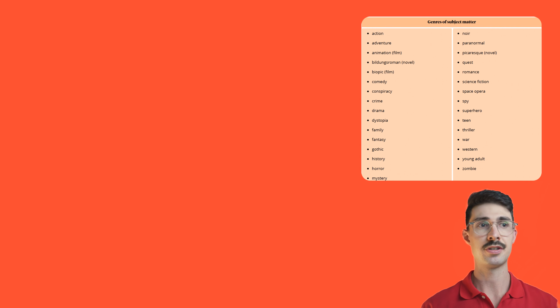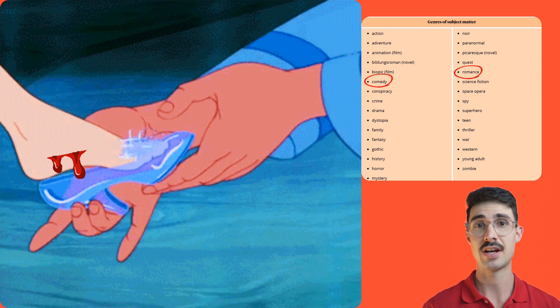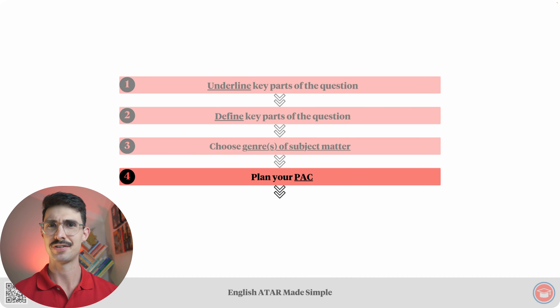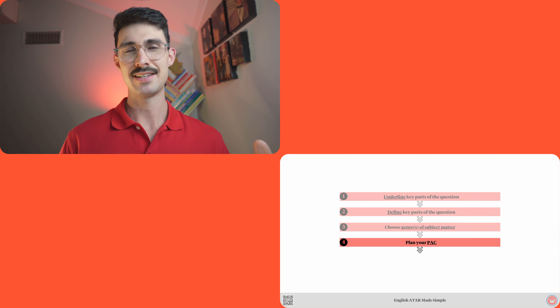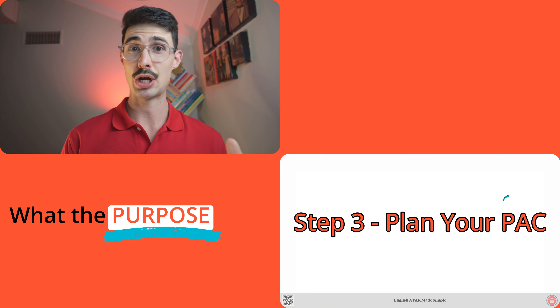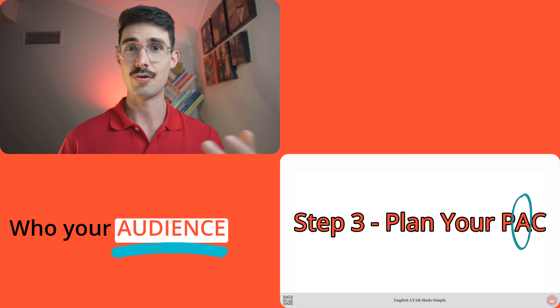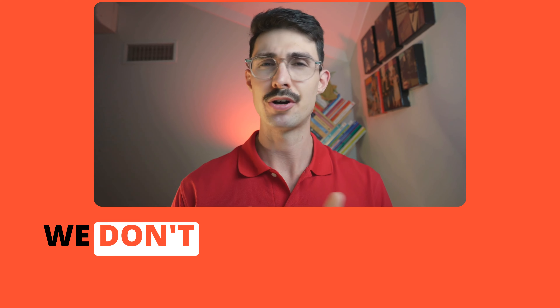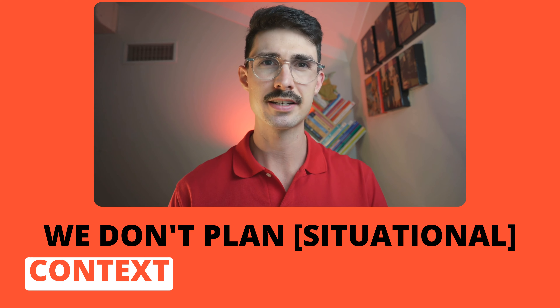For example, if you've chosen the romantic comedy genre of subject matter, you might manipulate the convention of a happily ever after ending. Step number four is plan your PAC. This is where you decide firstly what the purpose of your text is, secondly who your audience is, and thirdly what the cultural context is. Note that situational context doesn't really influence the construction of an imaginative text as much as it does for persuasive and interpretive texts, which is why we don't plan for it here.